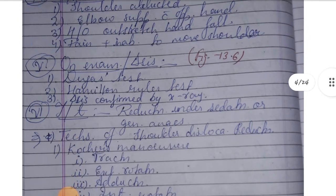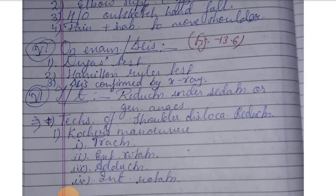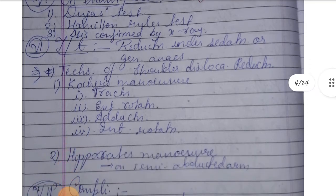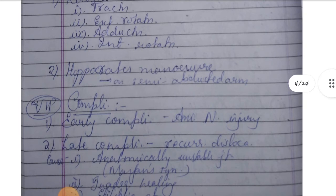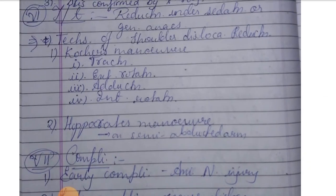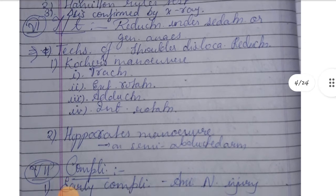Treatment is reduction under sedation or general anesthesia. Two techniques: first, Kocher's maneuver — involving traction, external rotation, adduction, and internal rotation. The elbow is flexed at a right angle, the arm is externally rotated, adducted across the body towards the midline, then internally rotated and placed across the opposite shoulder.